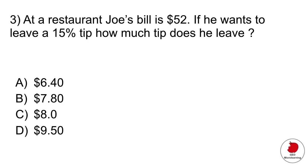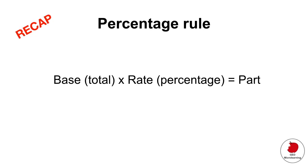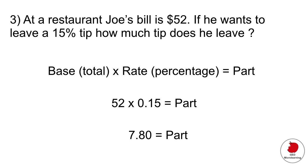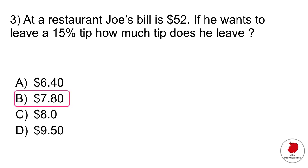At a restaurant, Joe's bill is $52. If he wants to leave a 15% tip, how much tip does he leave? Here it's very useful to remind ourselves of the percentage rule. The base total times the rate or the percentage gives you the part. The total was $52 and the percentage was 15% or 0.15. If we multiply those numbers it gives us $7.80 which he would leave as tip. So option B.